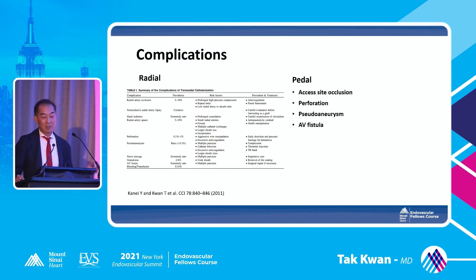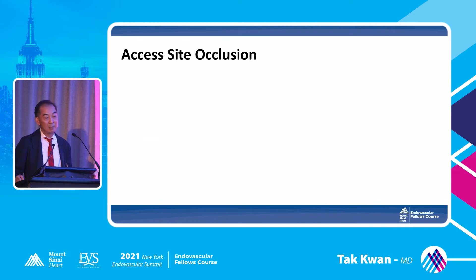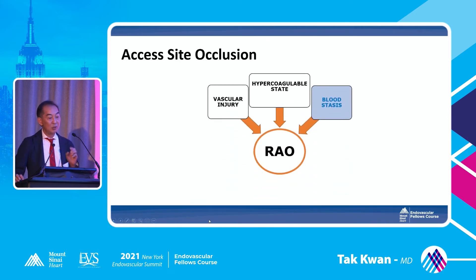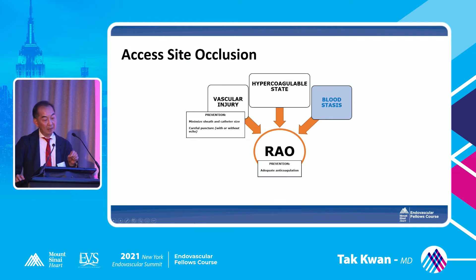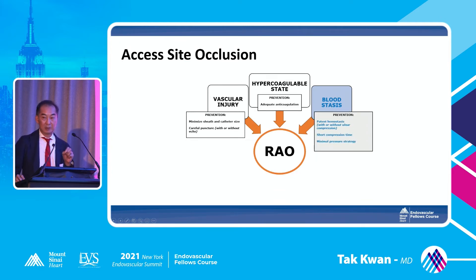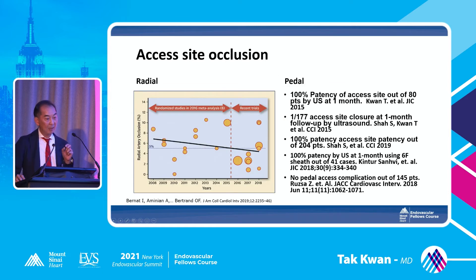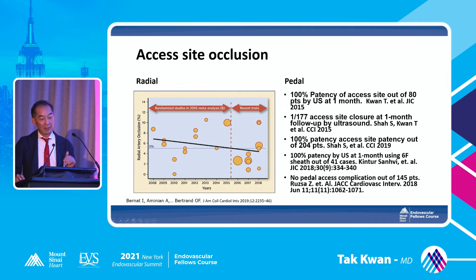Complications are also similar: vessel occlusion, perforation, pseudoaneurysm, AV fistula. Everybody worries about vessel occlusion, especially pedal. But we learn from radial — we can keep it very minimal. Vessel occlusion from vascular injury, hypercoagulable state, and stasis can all be prevented: use a minimum sheath size, give heparin, and keep a short occlusion time during hemostasis. Patent hemostasis is the key. Nowadays, radial occlusion is less than 5%, aiming at 2%. For pedal, small studies did not show big complications — I would guess very similar to radial.